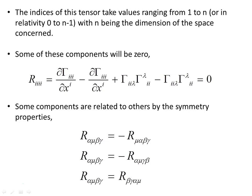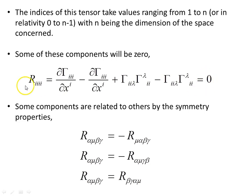Some of these components can be shown to be zero no matter what dimension we're in. If all the indices are the same and you substitute that into the expression, you'll find it's zero. So when the Riemann tensor has all indices the same, that component is zero.